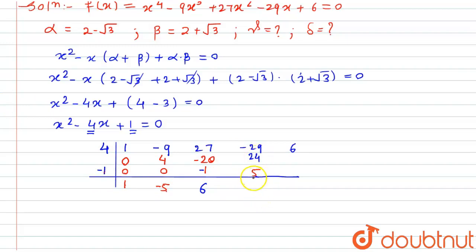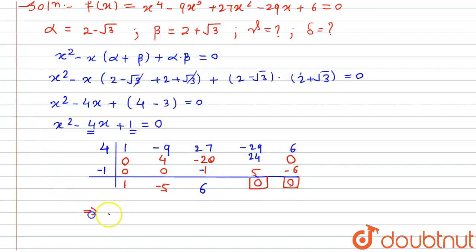24 + 5 = 29, and -29 + 29 = 0, so the remainder is 0. Then 6 × (-1) = -6, and 6 + (-6) = 0, so the second remainder is also 0. We obtain the quotient equation x² - 5x + 6 = 0, and solving this will give us the other two roots.